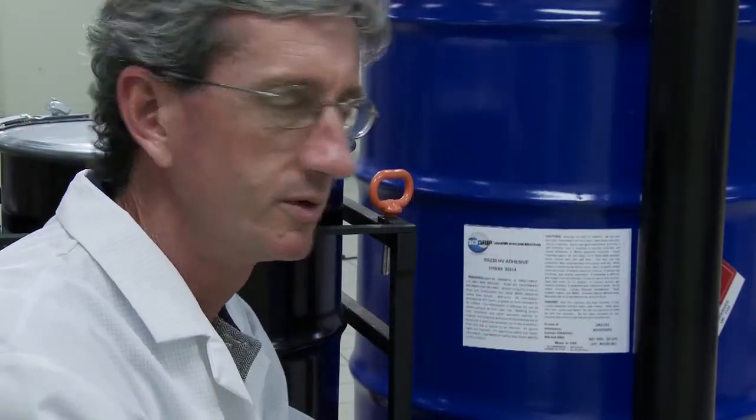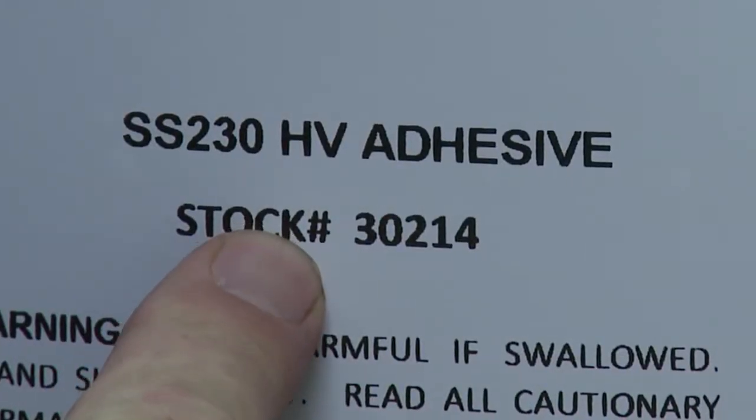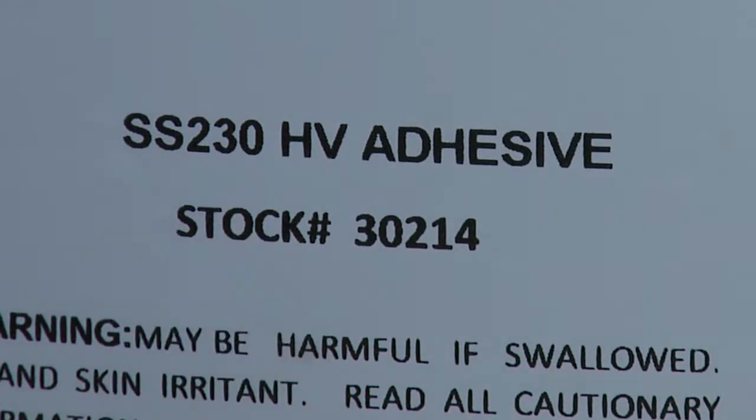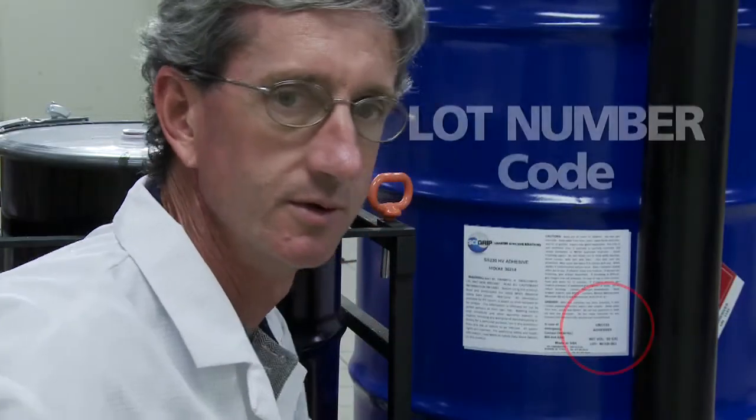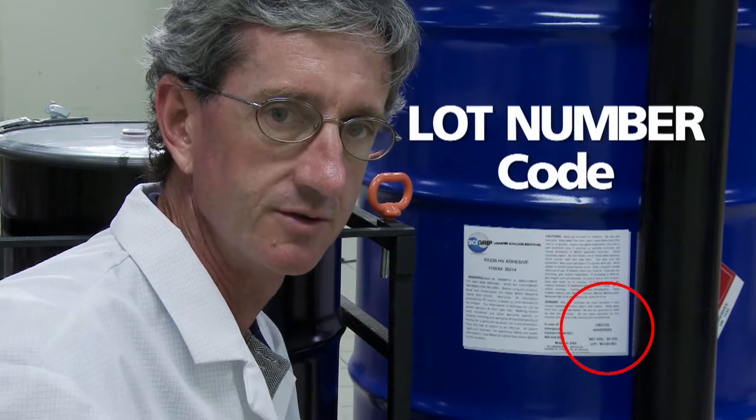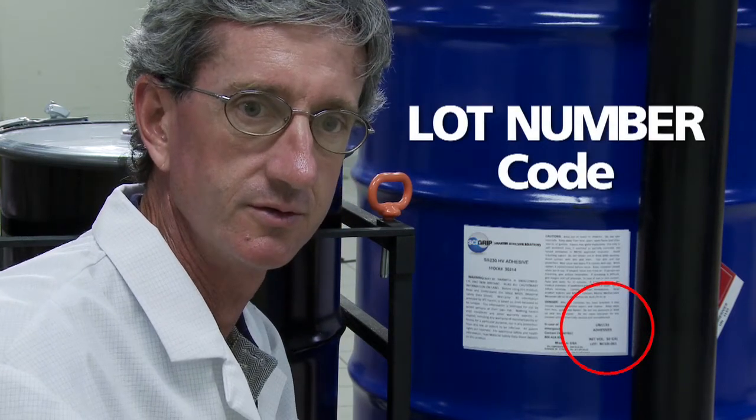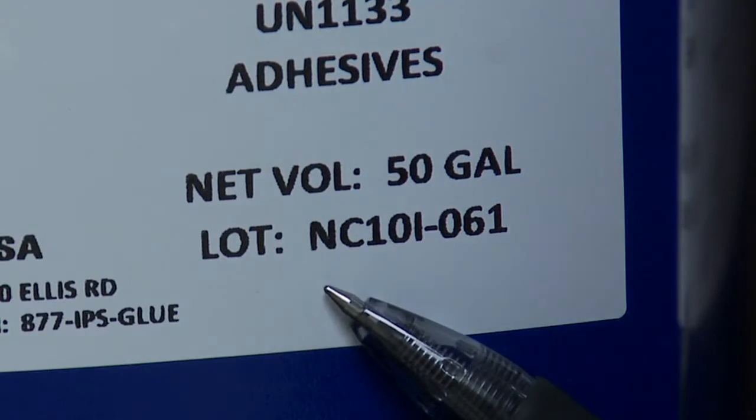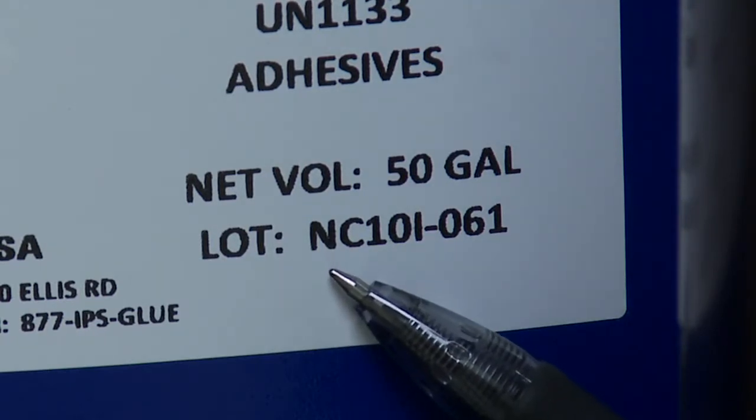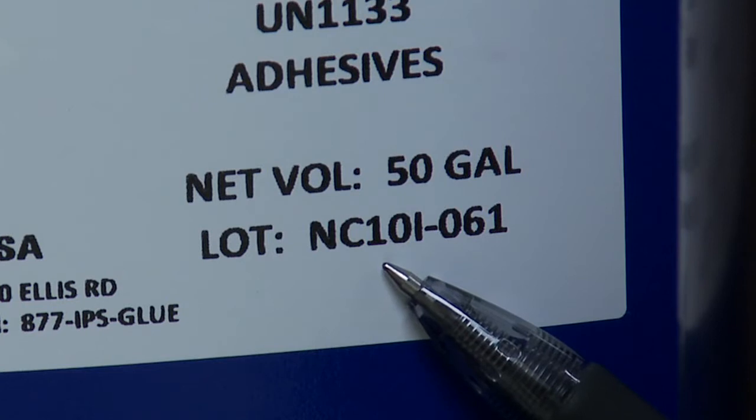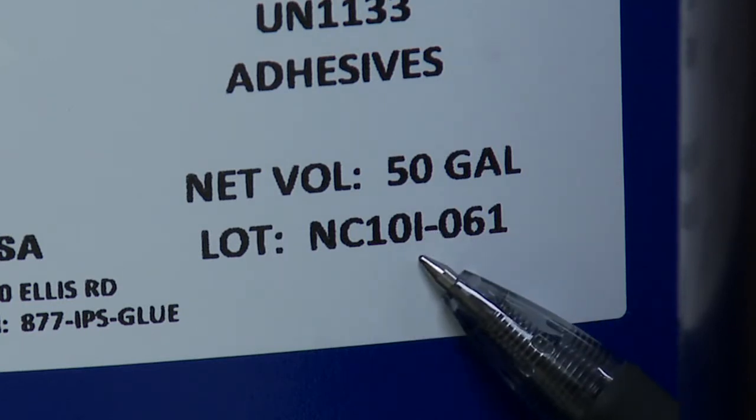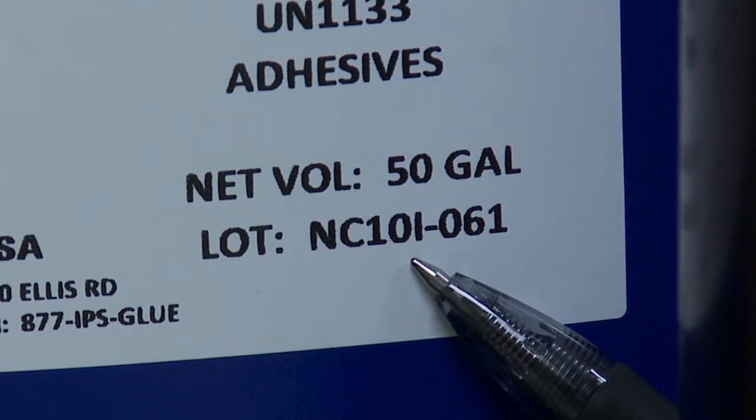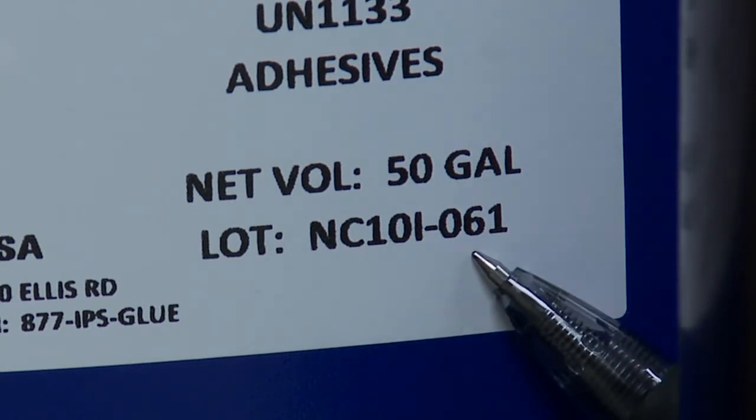To check the label, we'll look to make sure we have the correct adhesive for the application and then look in the bottom right hand corner to see the lot number, which has a code that indicates the date the batch was produced. This lot number indicates that this batch was made in North Carolina, and the year was 2010, and the letter I before the dash indicates that this is the ninth month and the 61st batch of that particular month. To decode the letter into the correct production month, I use a simple trick and count on my fingers.